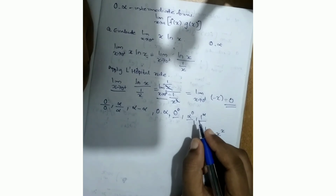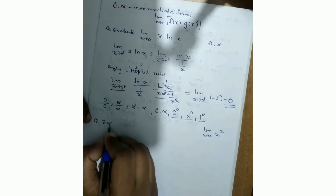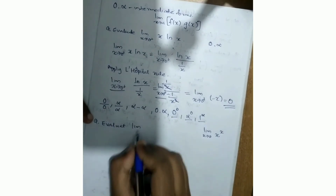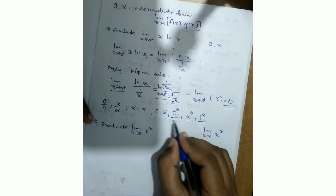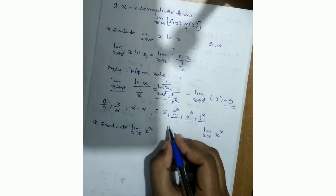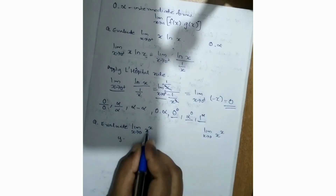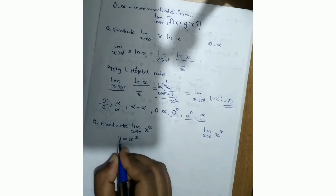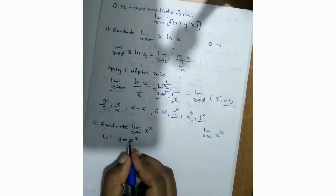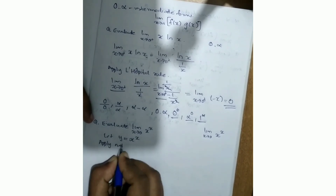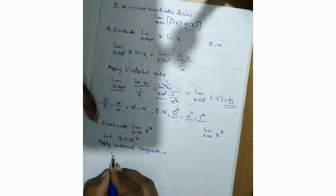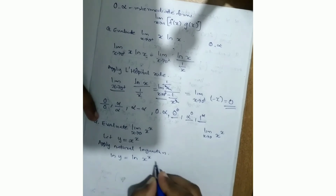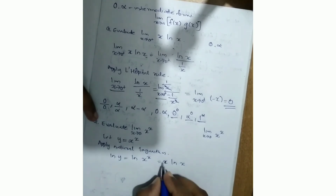We will evaluate these exponential indeterminate forms. For example: limit x tends to 0 of x^x, which is of the form 0 raised to 0. To solve this, we let y = x^x and apply the natural logarithm: ln(y) = ln(x^x) = x·ln(x). So we apply limit x tends to 0, and we need to evaluate x·ln(x).